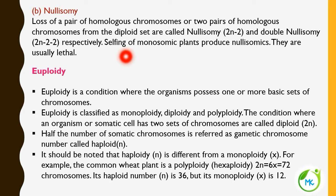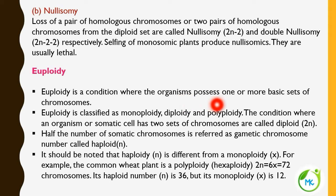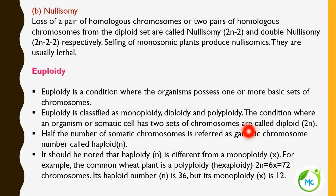We have now seen numerical chromosomal aberration, that is ploidy. Under ploidy there are two kinds: aneuploidy, which is changes occurring in the individual set of chromosomes, and euploidy. Under aneuploidy we have hyperploidy (addition) and hypoploidy (deletion). The second kind of numerical chromosomal aberration is euploidy. Euploidy is a condition involving one or more basic sets of chromosomes, and it is of three different kinds: monoploidy, diploidy, and polyploidy. An organism having two sets of chromosomes is diploid (2N), and half the somatic number is haploid (N).